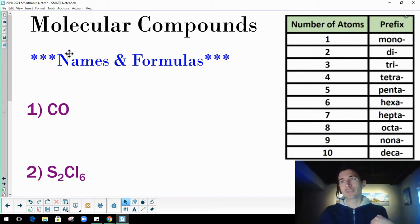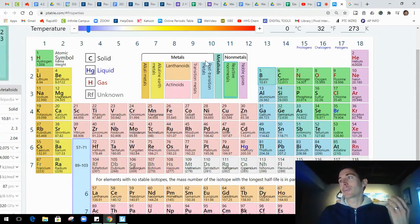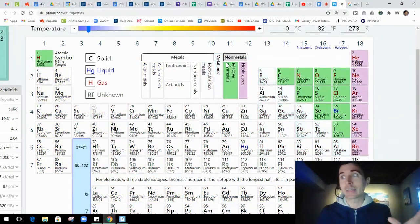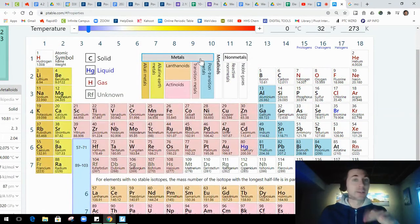So first for moleculars, molecular compounds involve covalent bonding, the sharing of electrons. So there's no transferring occurring. And for the sharing of electrons, it occurs only between non-metals and metalloids. That's it. We're not going to be focusing on any metals here.